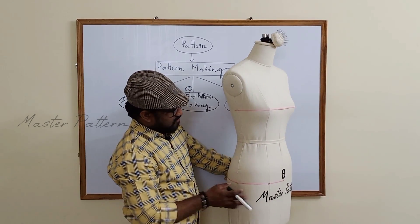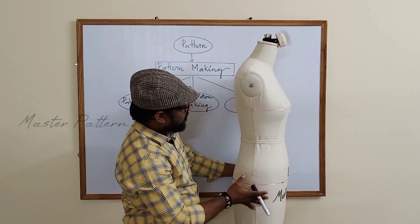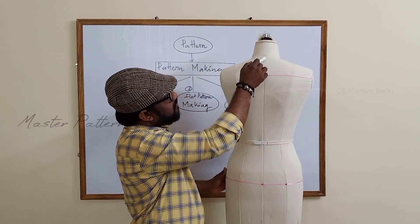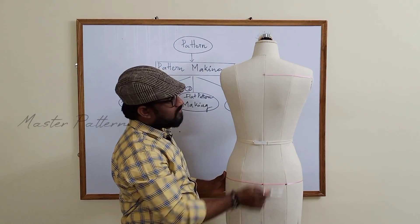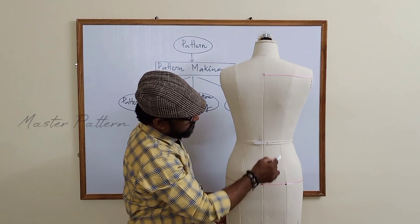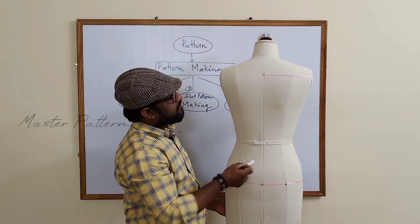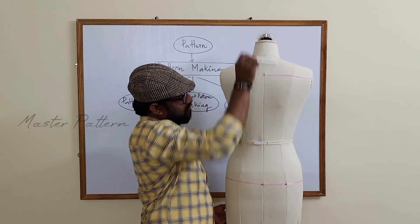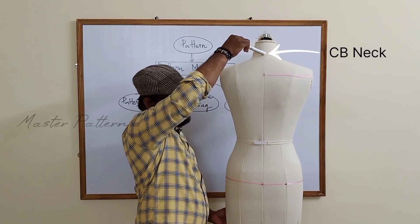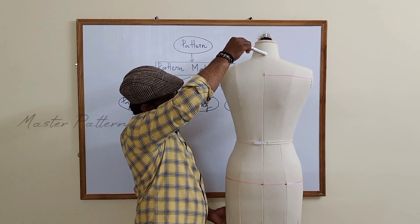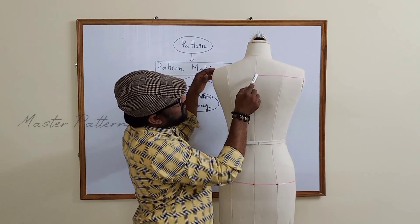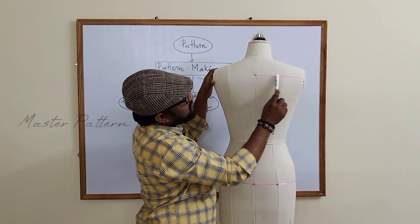The front is done. Now the back — if you understand the front, the back is very easy. This is the center back line. These are the back princess lines, also called style lines. The levels here are neckline, waist, and hip. This point is called center back neck.